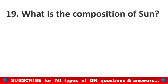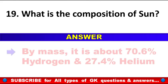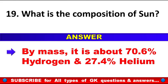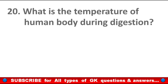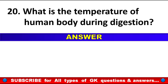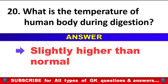What is the composition of the sun? Answer: By mass, it is about 70.6% hydrogen and 27.4% helium. What is the temperature of the human body during digestion? Answer: Slightly higher than normal.